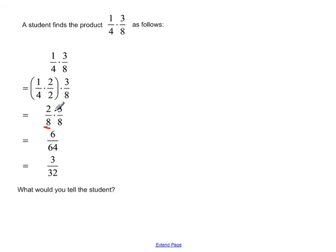Then once they got there, they multiplied straight across, two times three is six, and eight times eight is sixty-four. And then let's see, how did they get from six sixty-fourths to three thirty-seconds? What do you think they did there?